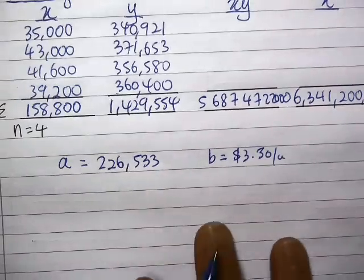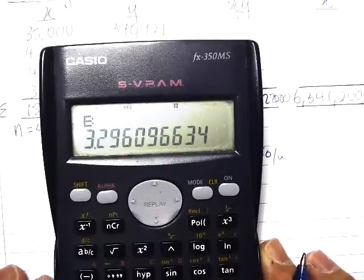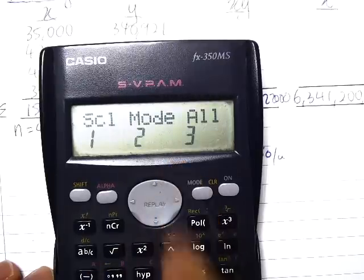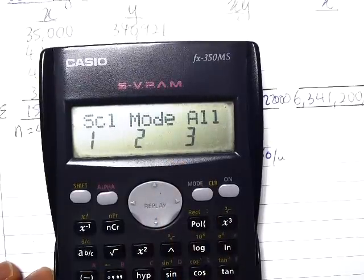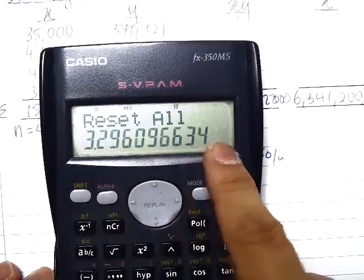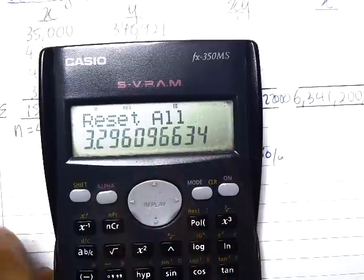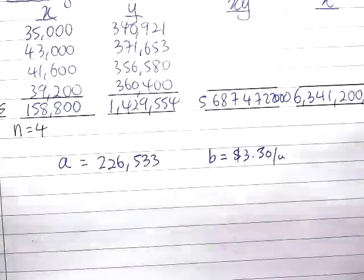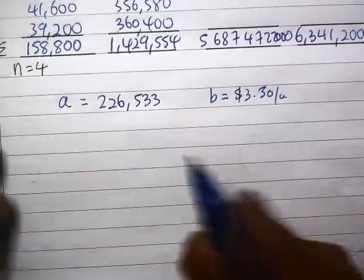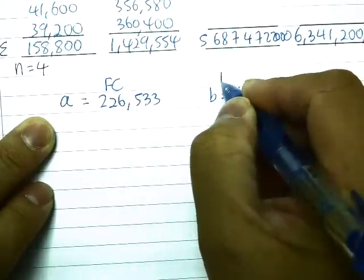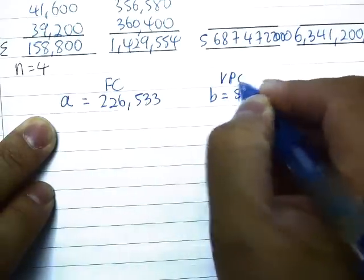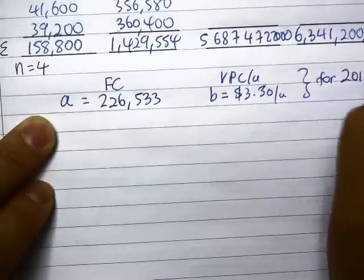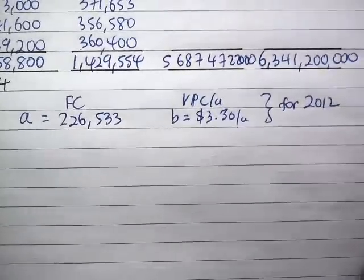So you've got all this done using your calculator. Remember, at the end, before you finish off, this is what you do. You just press Shift, Clear, and press number 3 will reset all the memory, all the things, and go back to the default mode. So this is fixed cost and variable production cost per unit for 2012.